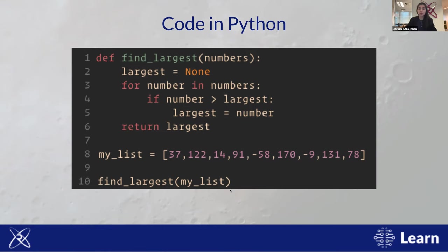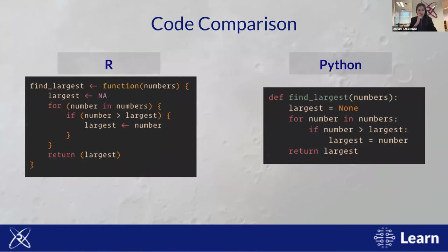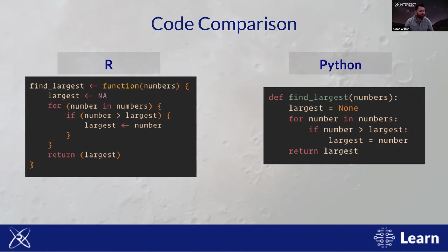Now we'll show these four concepts side by side in R and Python to demonstrate how fundamentally similar they are — so that if you learn to code in one language, that knowledge transfers to others. The importance here is to note that once you know what things are doing, it's quite easy to read code, and that multiple languages are very similar to one another. We have R on the left and Python on the right; broadly similar, but with some minor differences in how particular instructions are written.